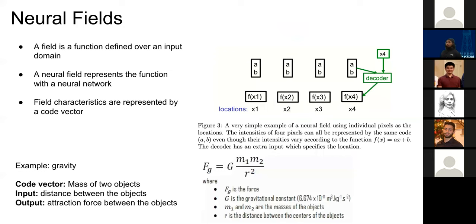Neural fields: a field is essentially a function defined over an input domain, and a neural field represents this function with a neural network. The field characteristics are represented by a code vector, and in addition to the code vector you input some position representation indicating where you are in the field, then get back the field intensity as the output from the decoder network.